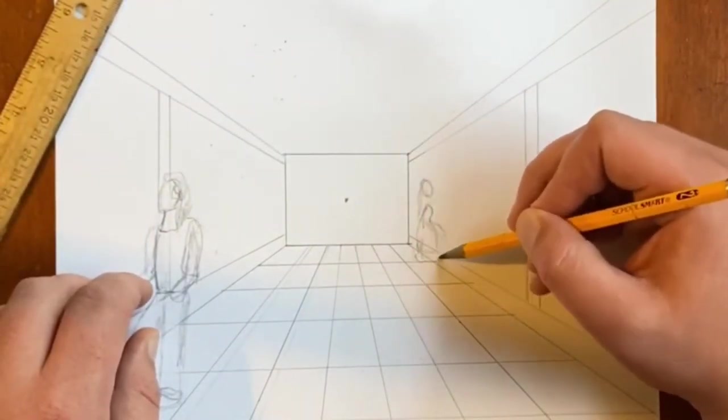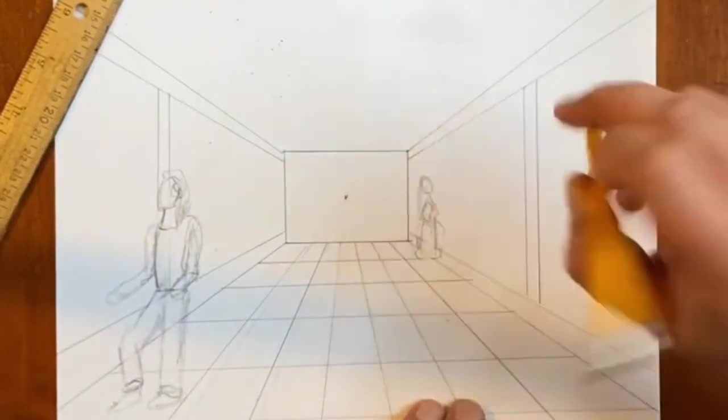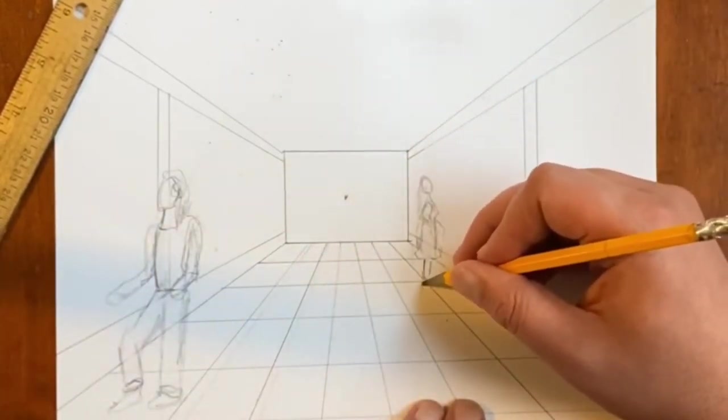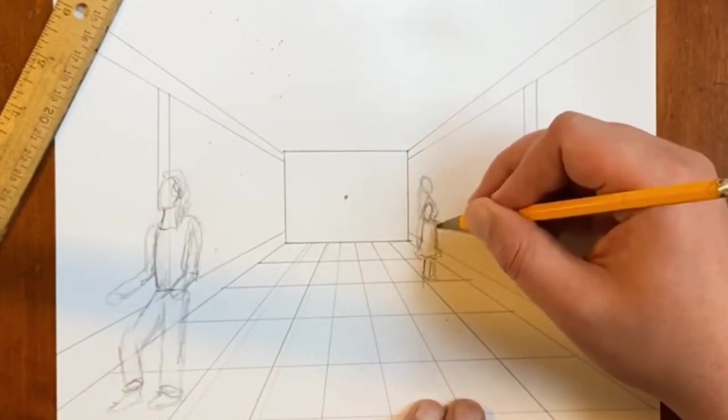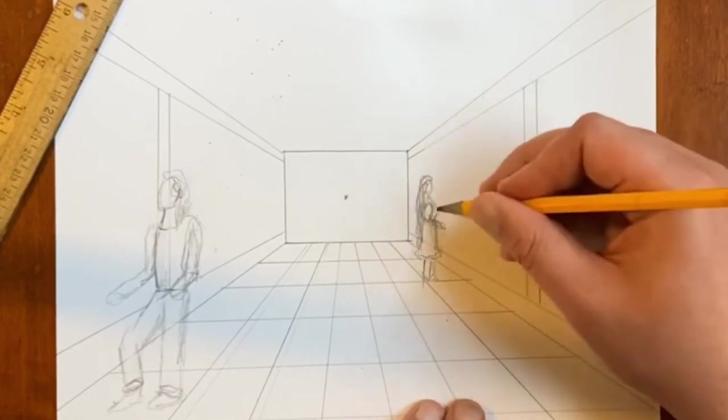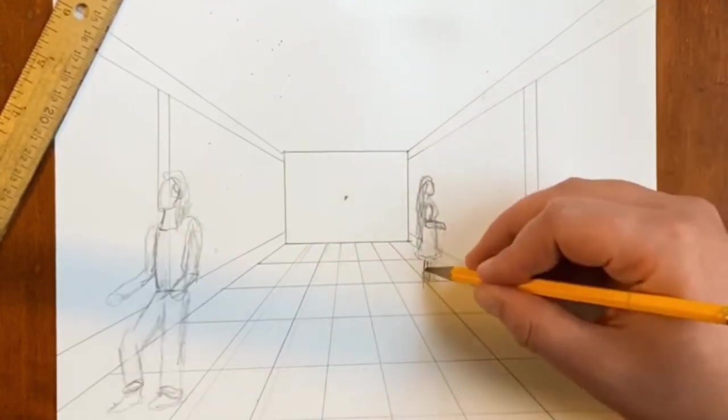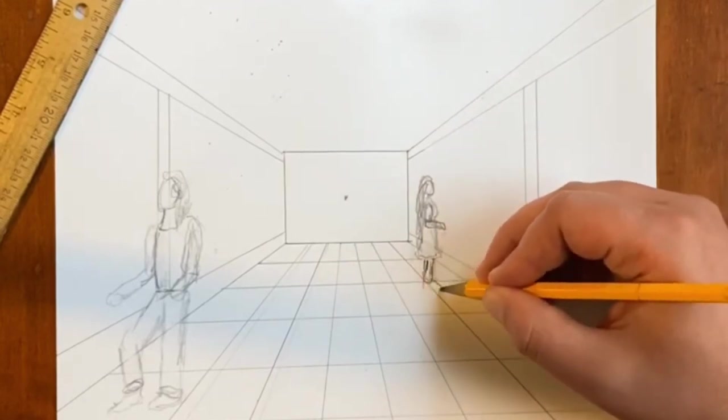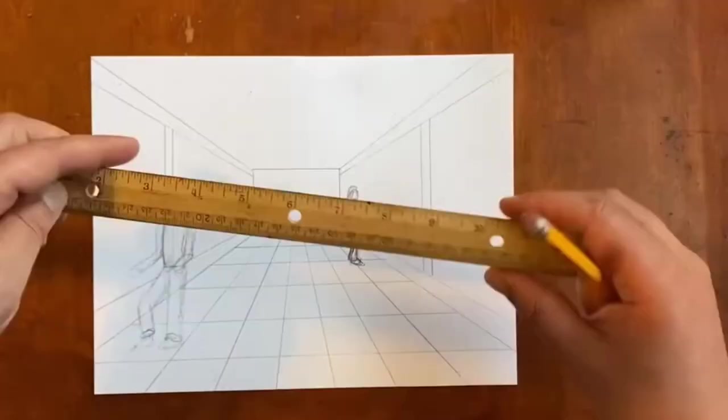I want you to put at least two people inside your room, one in the foreground and one in the middle ground or background. Just make sure that one of the people is a little bit further back into the room than the other one. Now remember we're not worried about making everything perfect. We're going to come back for the details. We're just getting the basic idea of where everything is.